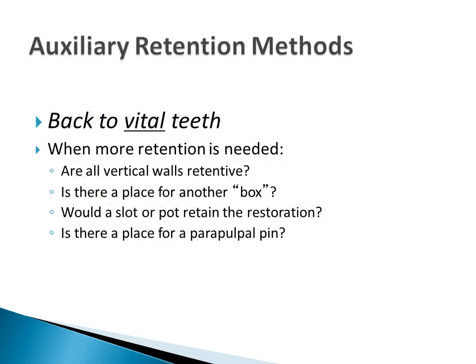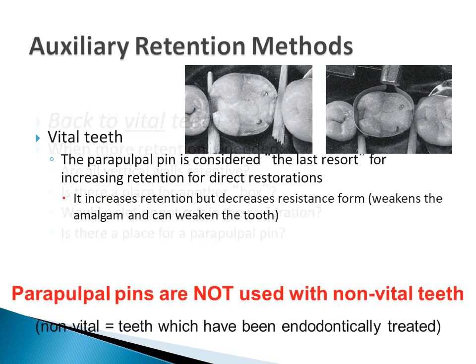Now back to vital teeth. When more retention is needed, ask yourself: Are all vertical walls retentive? If not, can I converge the non-retentive wall to increase retention? Is there an area where I could place another box? Would a slot or pot retain the restorative material? Is there an area where I can place a parapulpal pin? Do I need a combination of any of these methods? Do I need to use an adhesive restoration?